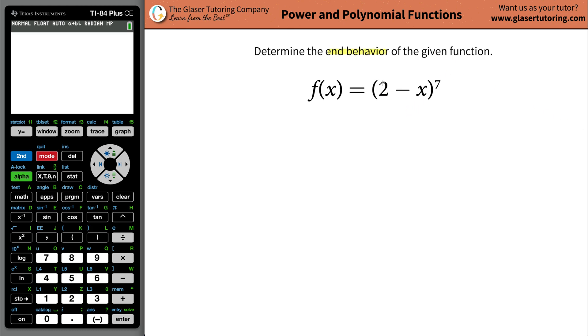Determine the end behavior of the given function, f of x is equal to two minus x raised to the seventh.